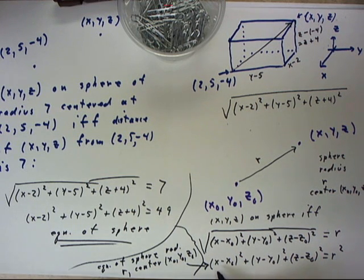If we have a set of values of x, y, and z that when plugged into this calculation we get R squared, then that point will be on the sphere of radius R centered at the point x0, y0, z0. And if a point is on the sphere, then if we plug its coordinates into this equation we're going to get an identity.